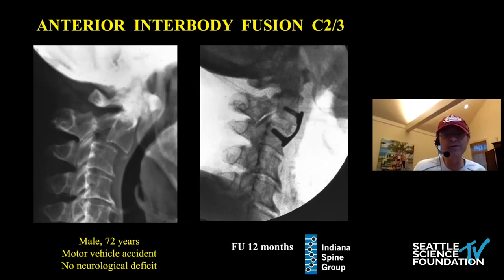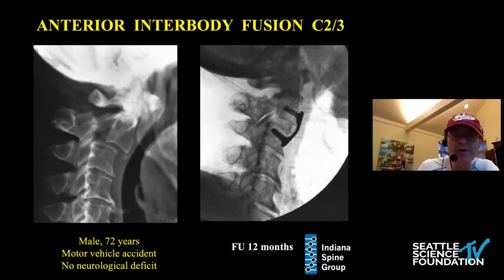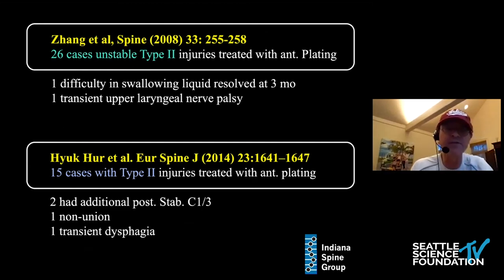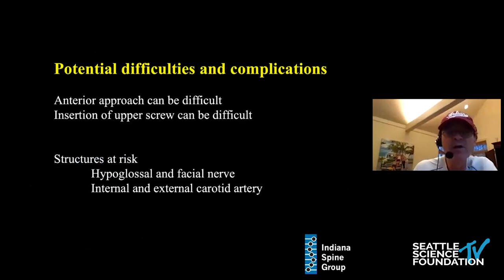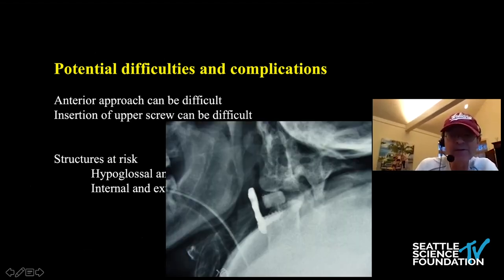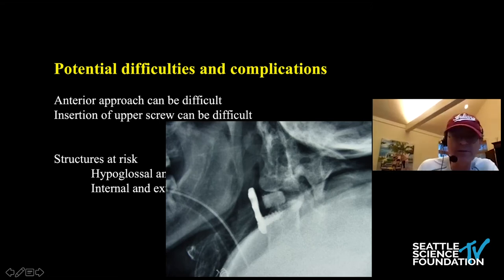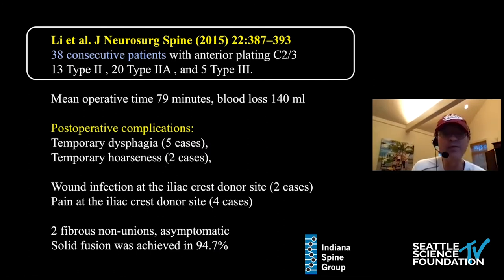Here is an example of an anterior cervical discectomy and fusion at C2-C3 for a displaced type 2 Hangman's fracture. The problem with this operation is the significant incidence of dysphagia when we expose the upper cervical spine — this is the most common complication with this technique. It can also be extremely difficult to place the upper screw because of the mandible, and this can be technically challenging, sometimes requiring the patient to be flipped over for posterior stabilization as well.